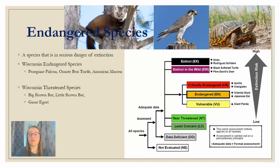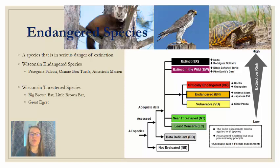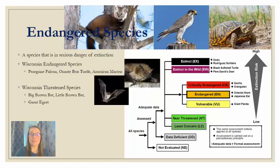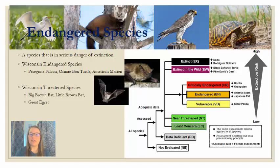We also have threatened species — those on the way toward endangered status but not yet at critically low populations. Threatened species in Wisconsin include the big brown bat, the little brown bat, and the great egret.